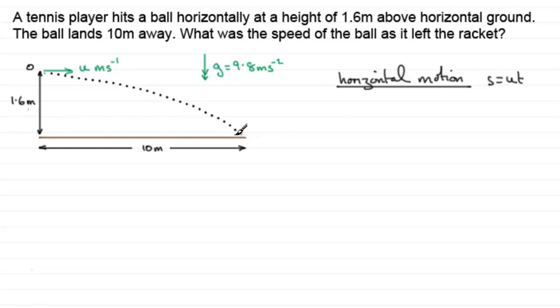We know s is going to be 10. We want u, but we don't know t. So we've got to get t before we can actually work out what u is. And to do that, we consider the vertical motion.